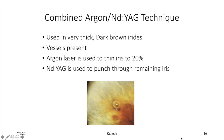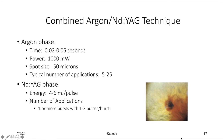You can also combine argon/diode and ND YAG lasers. This works well in very thick, dark brown irides where you want to thin the stroma before doing the ND YAG. You thin it with the argon, then punch through with the ND YAG. If vessels are present, photocoagulate the area around them to decrease bleeding risk. Argon thins the iris to about 20% of its normal thickness, then ND YAG punches through the remaining stroma. Settings are similar to each laser used individually.